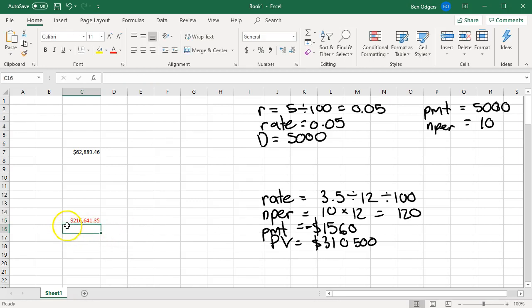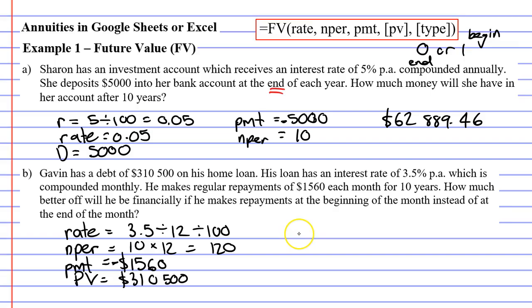This gives me the amount of negative $216,641.35. And this makes sense this time. We're talking about a loan. So we want a negative amount. So we'll copy that across for now. So we have a future value, which is negative. And it's $216,641.35. Now this is what you would get if you made your payments at the end of the month. So we'll write end here. That's because we put a zero in for our type.